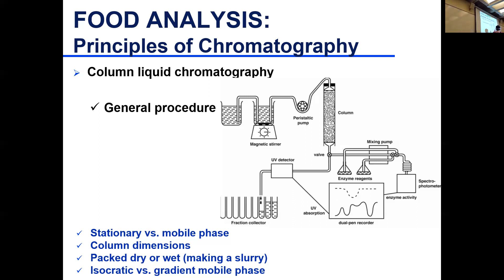A sample is injected through an injection port at the top of the column. The components within the sample start moving along with the mobile phase and interacting with the stationary phase. Based on how they interact, they get separated — some move faster with the mobile phase, some get detained.